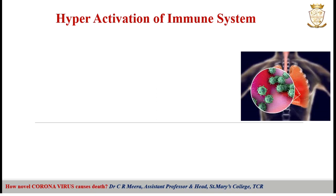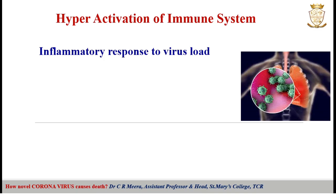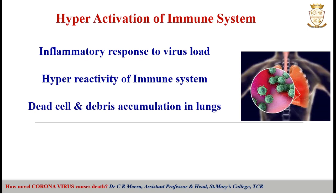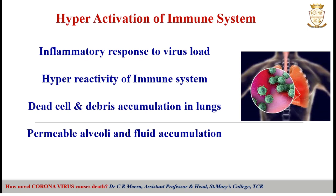As an immune response to this increasing virus load, the host sets up an inflammatory response. Inflammation is a normal host defense mechanism and is usually confined to a particular area. But here, inflammation leads to destruction rather than defense. Multiplication of the virus in the host leads to the second stage of attack: hyper-reactivity of the immune system. This overreaction leads to damage of healthy tissues, and inflammation leads to accumulation of dead cells and debris in the lungs, considerably reducing the ability of the lungs to oxygenate our blood. Hyper-reactivity of the immune system also leads to a cytokine storm.